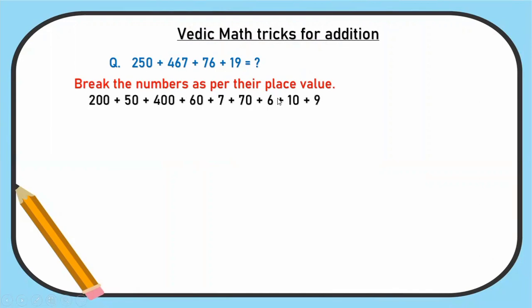That is 200 plus 50 plus 400 plus 60 plus 7 plus 70 plus 6 plus 10 plus 9. Now you can add 100s with 100s. That is 200 plus 400, that is 600. Now 10s with 10s: 50 plus 60 plus 70 plus 10, 190. Then 1s: 7 plus 6 plus 9, that is 22.